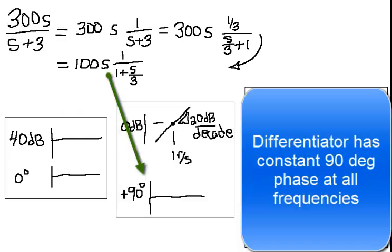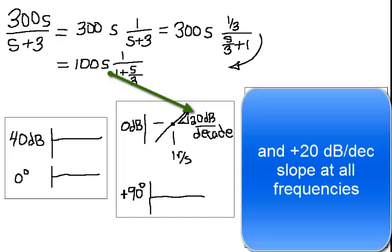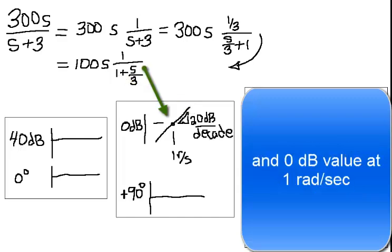The differentiator has a constant 90 degree phase at all frequencies, and a plus 20 dB per decade slope at all frequencies, and 0 dB value at 1 radian per second.